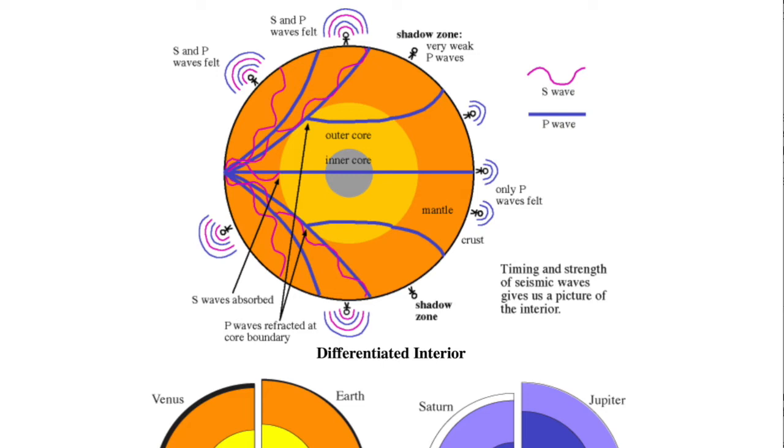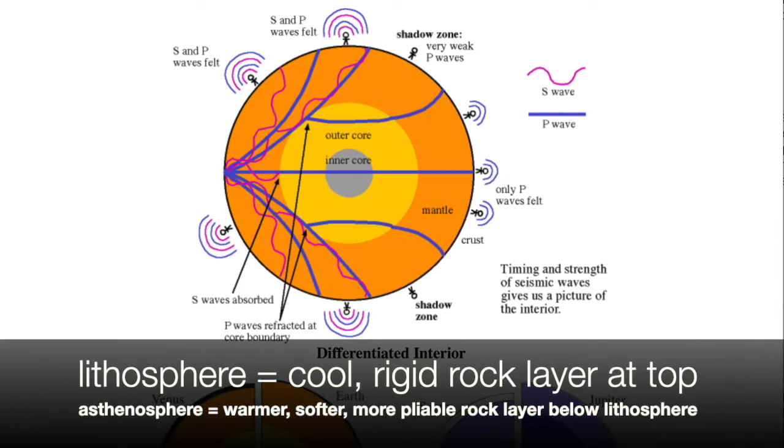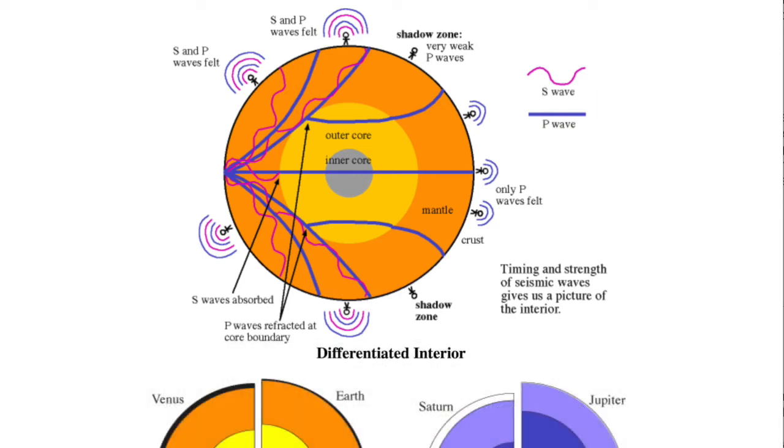The very upper layer of the mantle and the crust make up a relatively cool, rigid rock layer called the lithosphere that floats on a warmer, soft, or more pliable rock layer beneath it called the asthenosphere. Small planets have very thick lithospheres that extend from the surface to almost the core. Large planets will have thin lithospheres because they still retain a lot of heat.